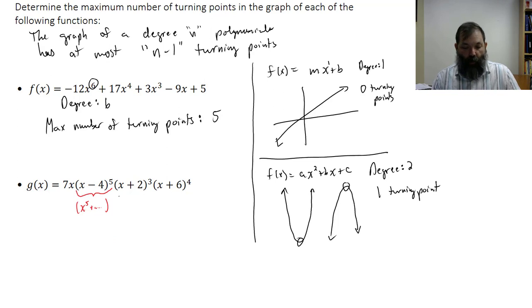Similarly, if I were to multiply out this (x + 2)^3, that's going to give me an x^3 plus other terms. And also for the (x + 6)^4, that would give me an x^4 plus some other terms. And I still have a 7 times an x.